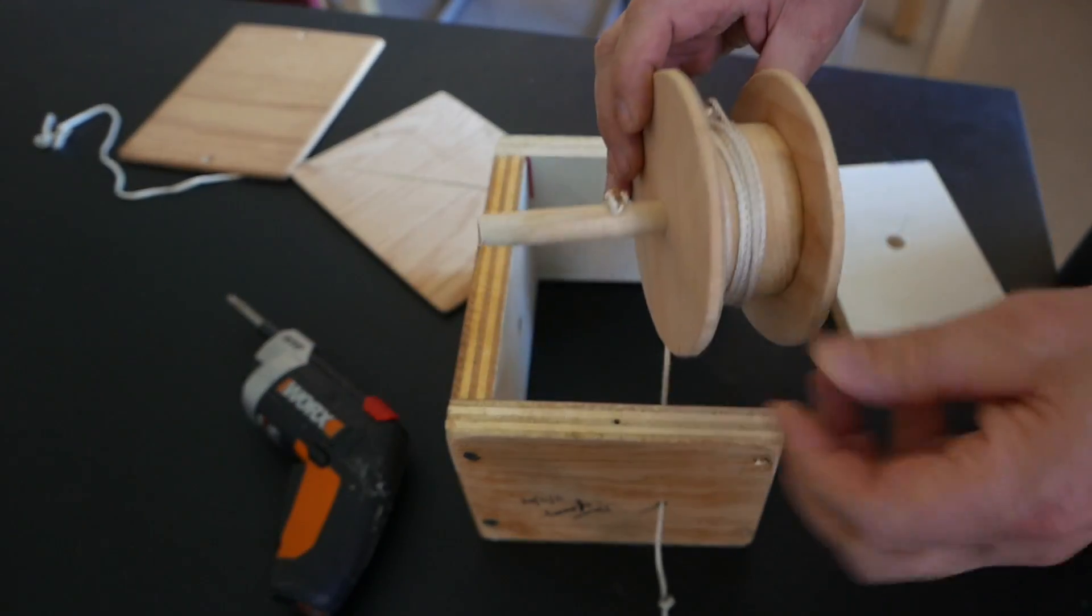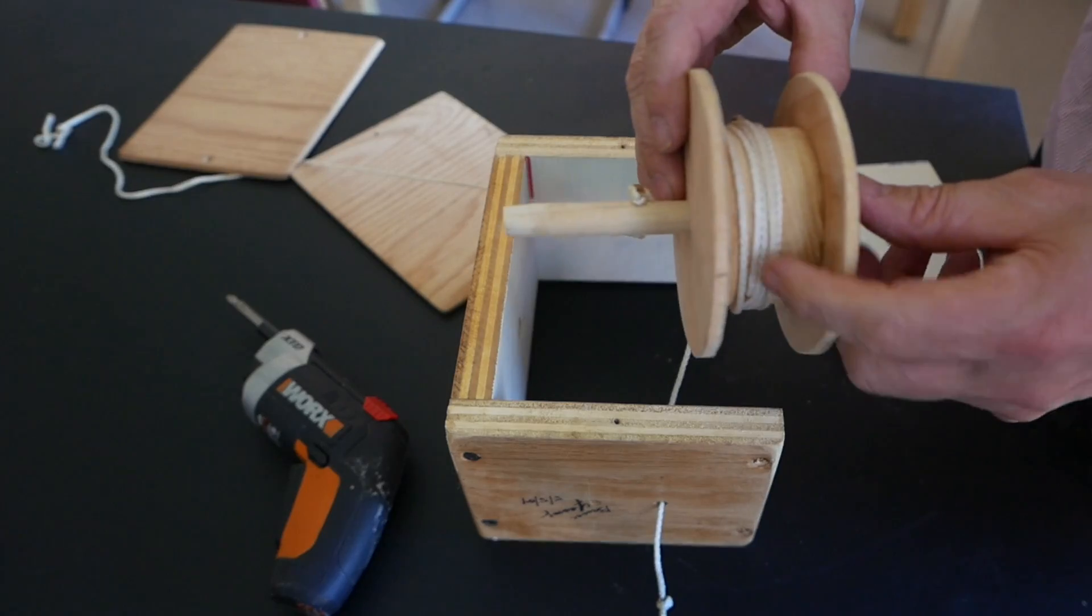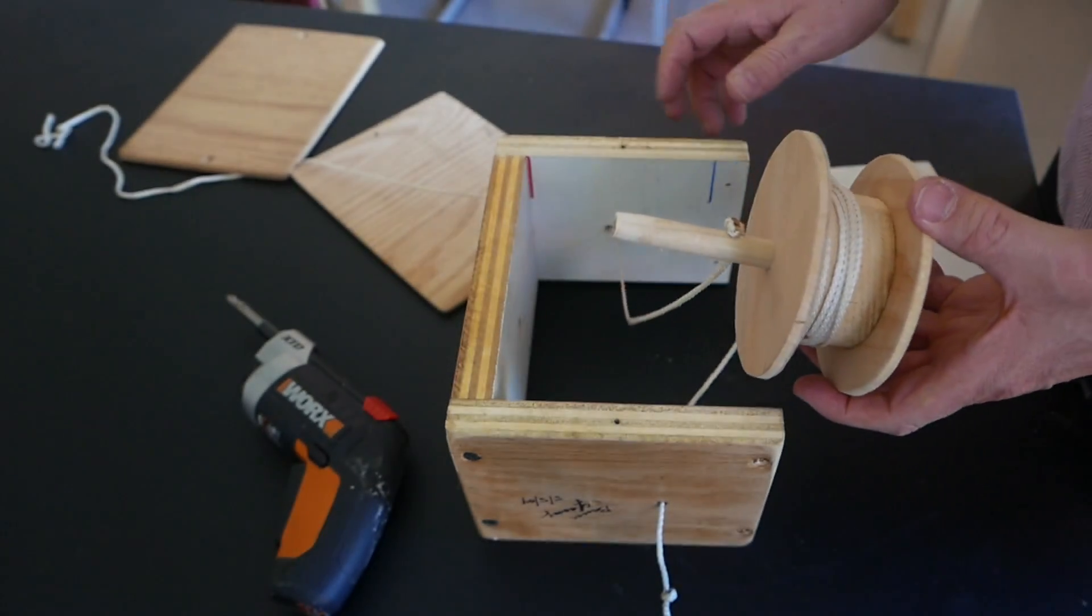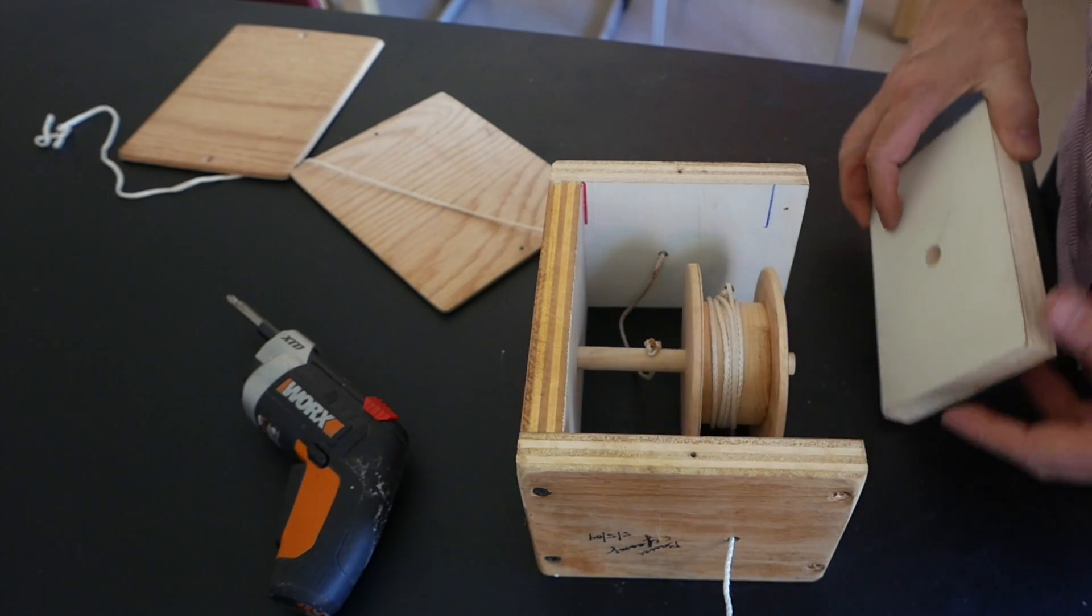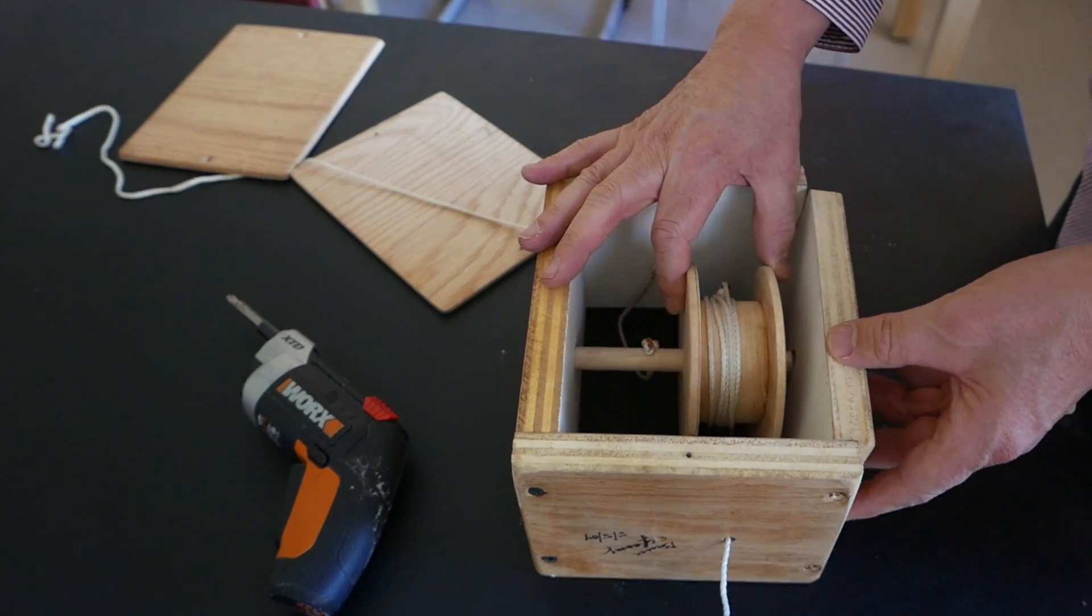Here's a better view of it. As you can see, there's two separate strings, one attached to the wheel and one's attached to the axle. Now I'll put it back together.